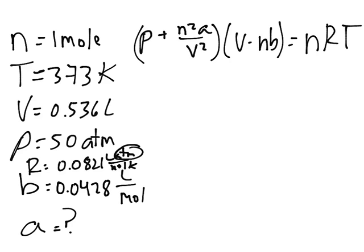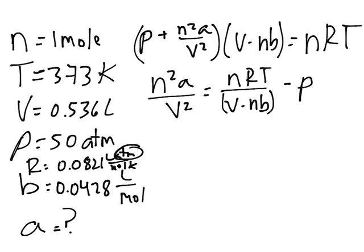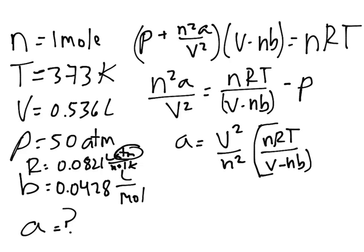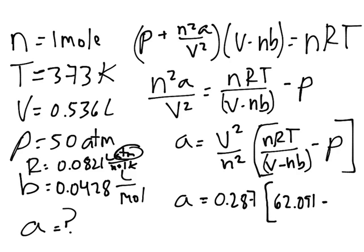Now, let's solve for a first. So n²a over V² is going to be equal to nRT over (V - nb) minus the pressure. I know it's a lot of calculations, but that's how it works for non-ideal gases. So I get that V² over n² is 0.287. I'm not writing the units for now, I'll do it at the end. And this part, I get that nRT over (V - nb) is 62.091, and the pressure is 50.